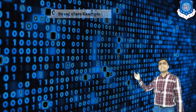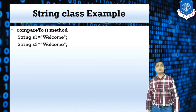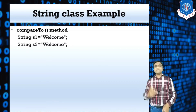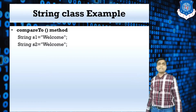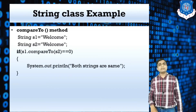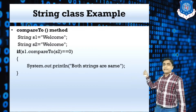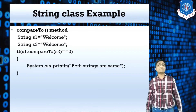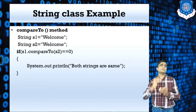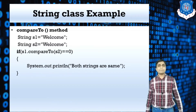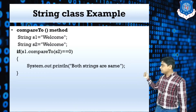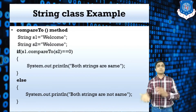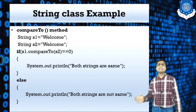The next example is the compareTo method. I have two strings s1 and s2, both with the value 'welcome'. In an if statement, s1.compareTo(s2) must be compared to zero — because this method returns an integer. This is the key difference between equals and compareTo: equals returns a boolean, compareTo returns an integer. If both strings are equal, it returns zero; otherwise a positive or negative value.